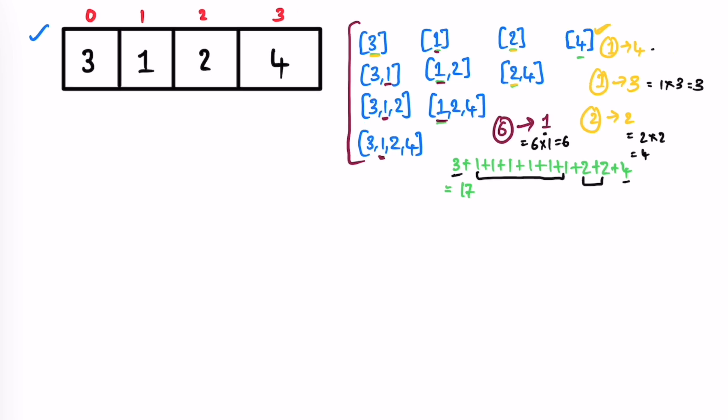For the right next smaller array, we iterate from right to left. At index 3 (element four), no smaller element exists to the right, so we assign index 4 (length). At index 2 (element two), no smaller element to the right, so assign index 4. At index 1 (element one), no smaller element to the right, so assign index 4. At index 0 (element three), element one at index 1 is the right next smaller, so assign index 1. Both arrays are now ready.